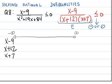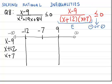x minus 9 is 0 when x equals 9. x plus 12 is 0 when x equals negative 12. And x plus 7 is 0 when x equals negative 7. These three zeros split the number line into four intervals, and I'm going to check the sign of each factor in each interval.